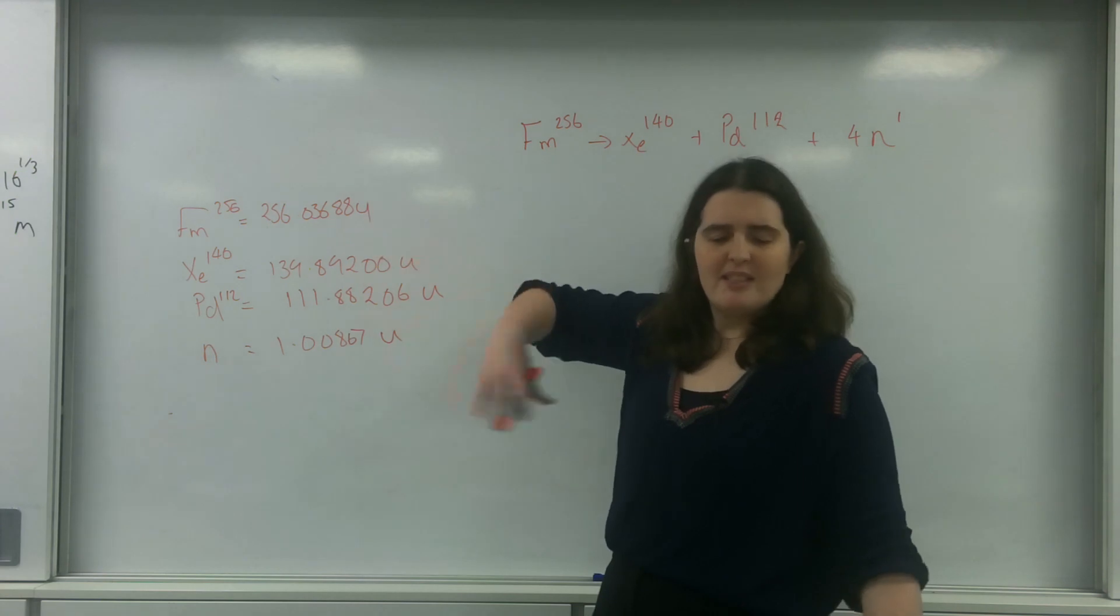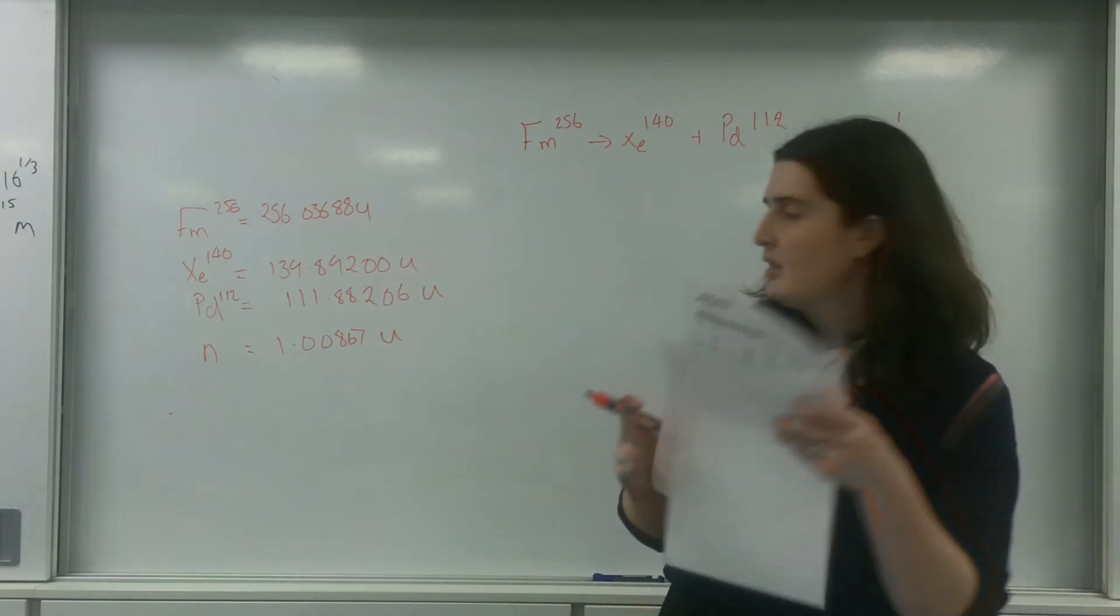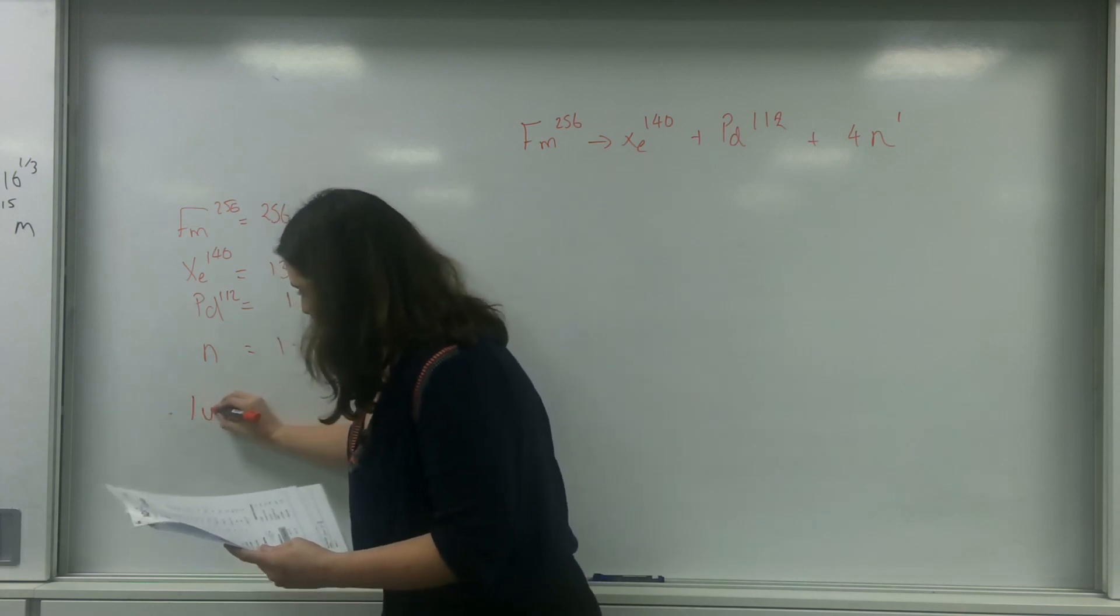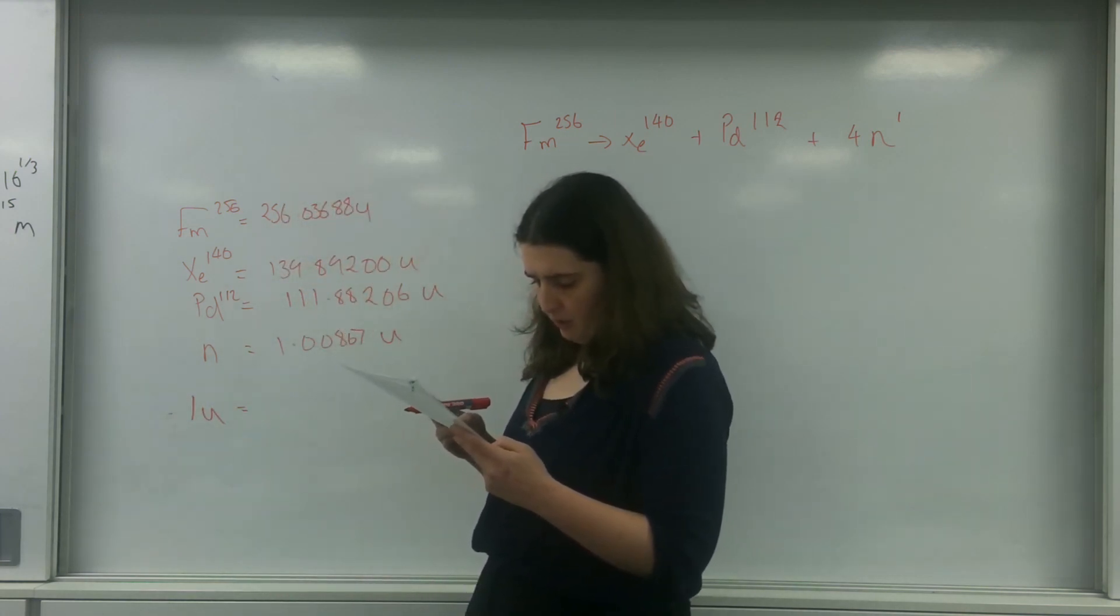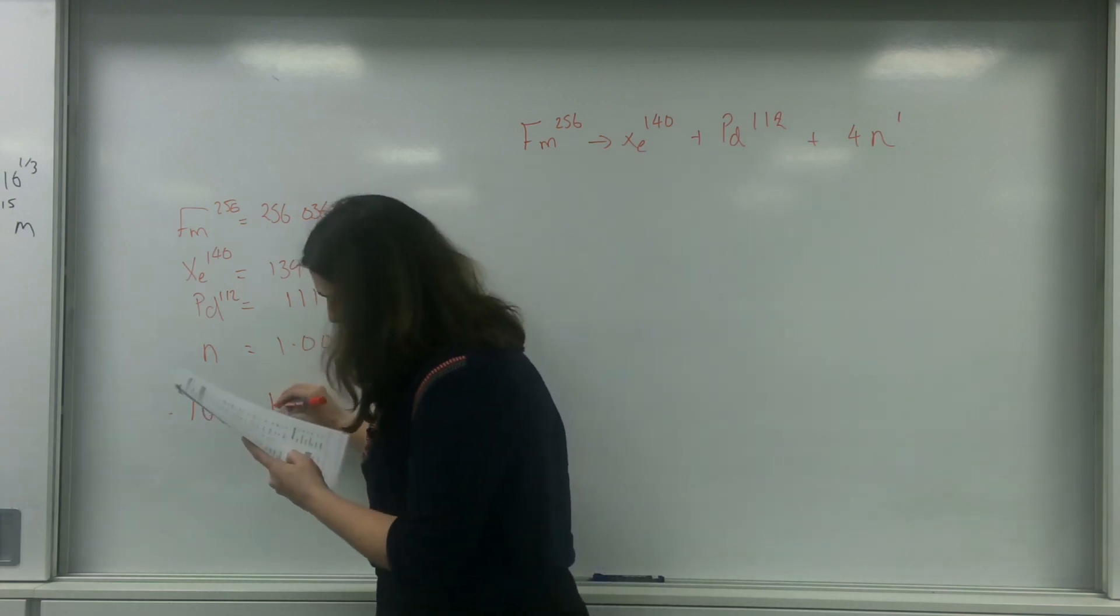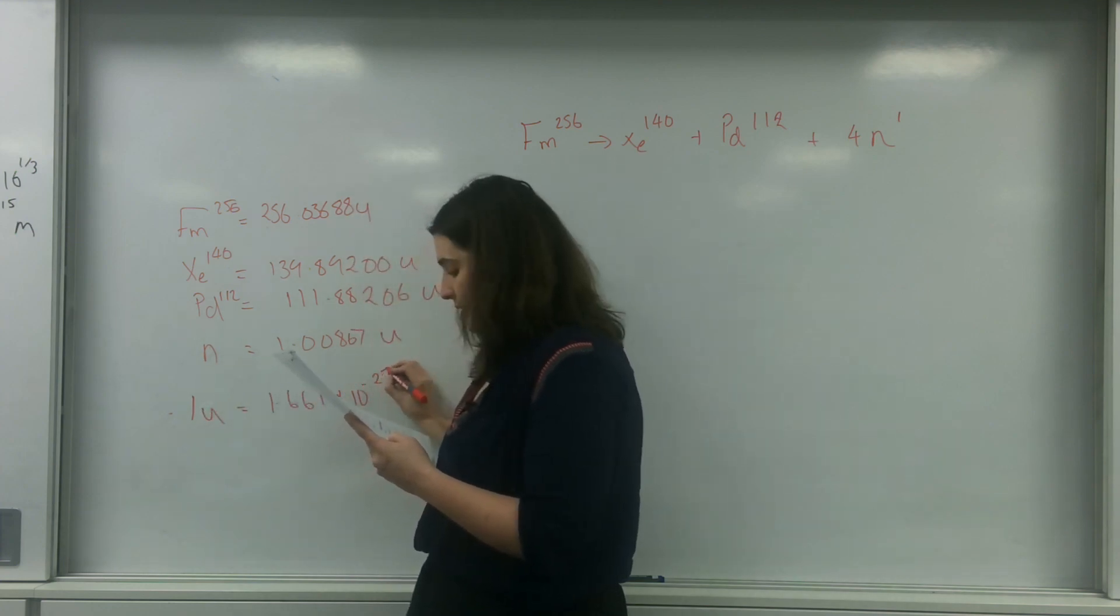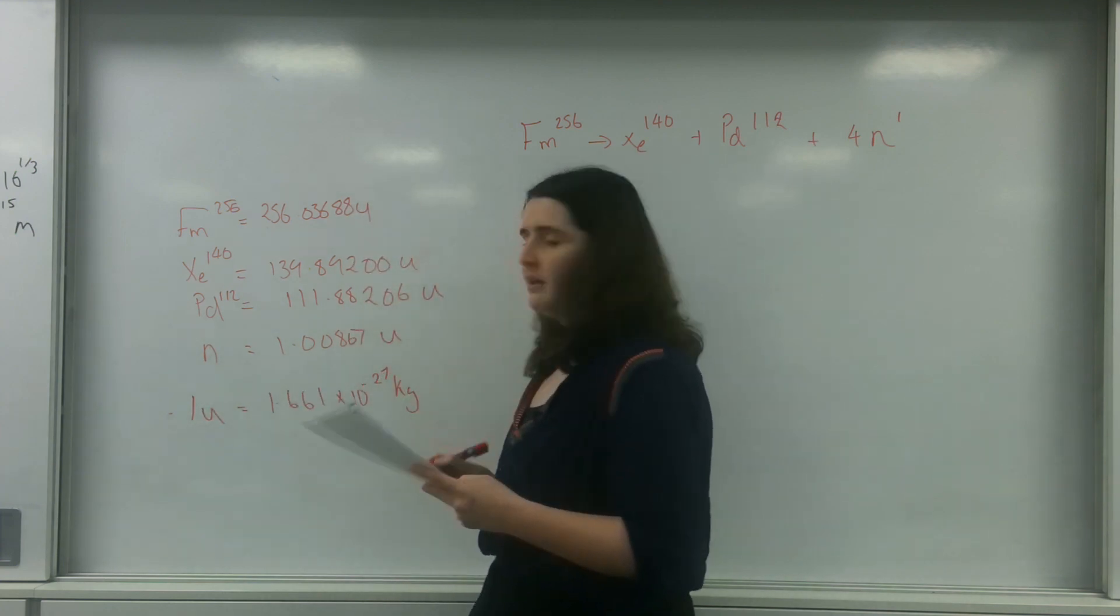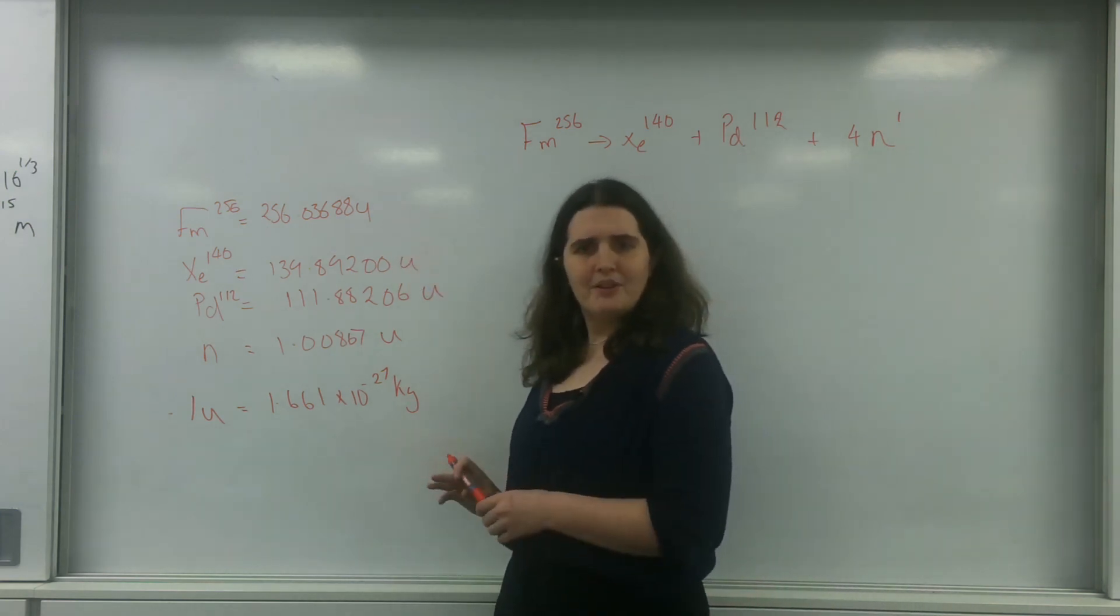So I've got this idea of U, and this is an atomic mass unit. You can find this on the front of your data sheet. One U, the atomic mass unit, is 1.661 times 10 to the minus 27 kilograms. As you can see, we leave it in U because it's much easier to deal with.